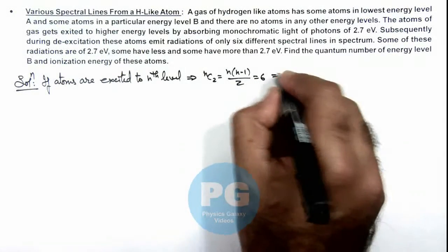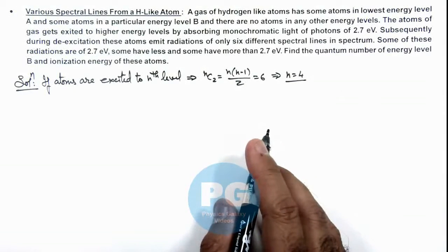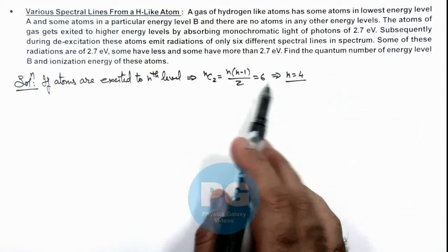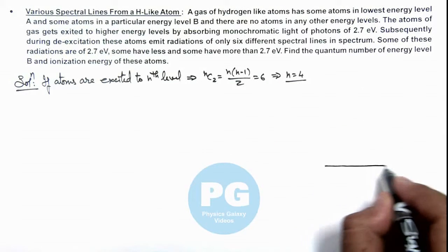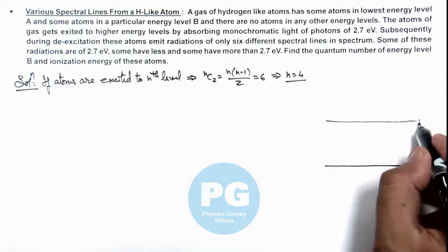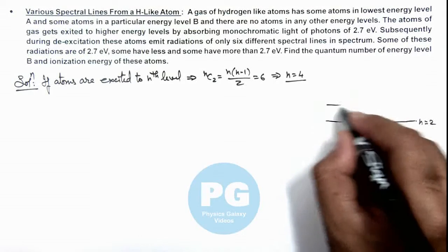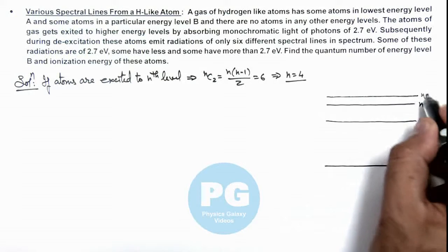This gives us the value of n is equal to 4. That means finally the atoms are excited to n equal to 4 level. Here we can draw the energy level diagram also. If this is n equal to 1, this is n equal to 2, here is n equal to 3, and we consider this as n equal to 4.